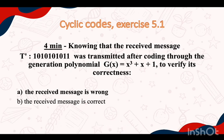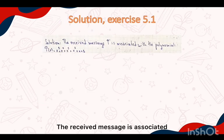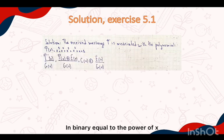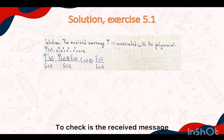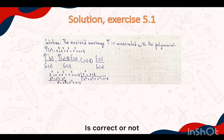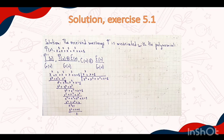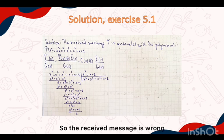The next part. The received message is associated with polynomials where the position of 1 in binary equals the power of x. To check if the received message is correct or not, we divide t(x) by the generating polynomial, and if the remainder equals 0 the received message is correct. If it is not, the received message is wrong. In our example the remainder equals x, so the received message is wrong.